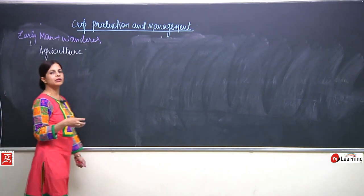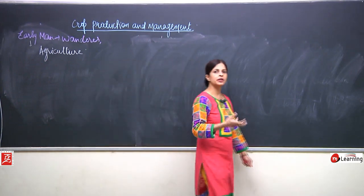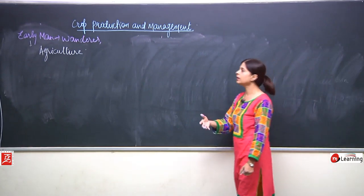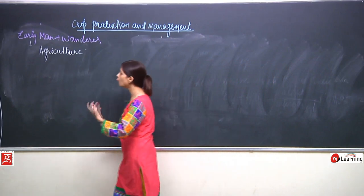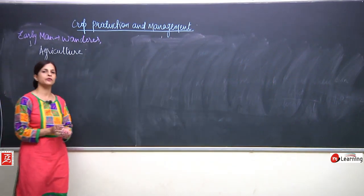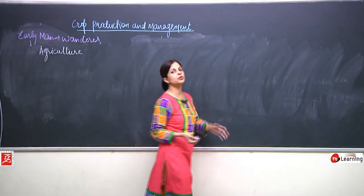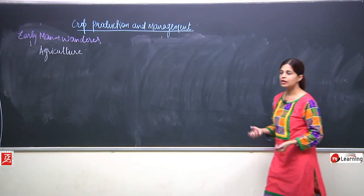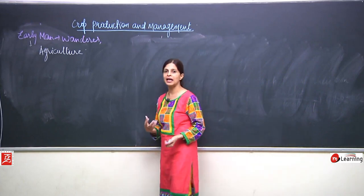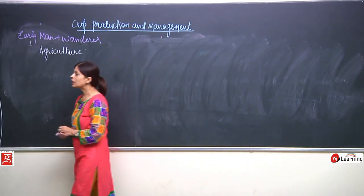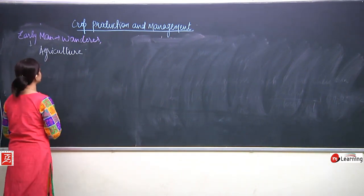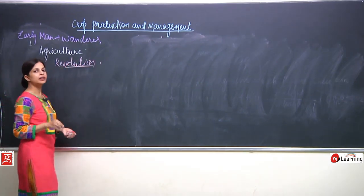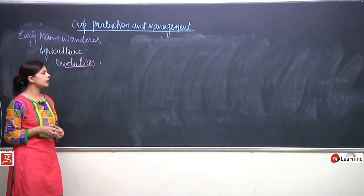Every living thing depends upon plants for food. Our population ranks second in the world - with such a huge population, it is very difficult if crop production is not good or if the food we are getting is not enough. So scientists keep on doing research and trying to bring revolutions in the field of agriculture.